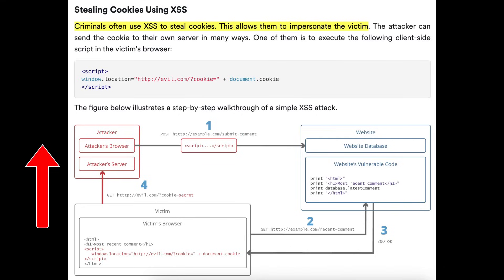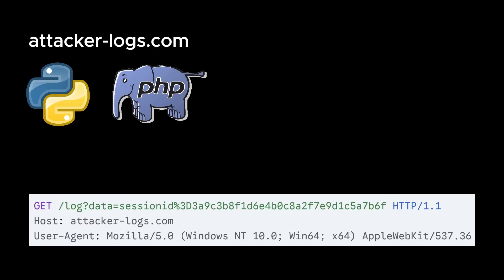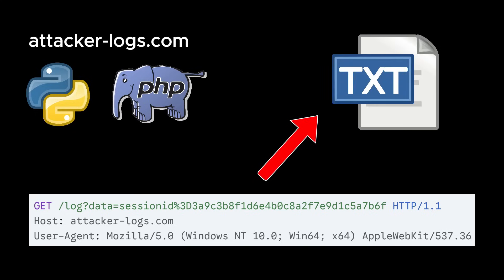The attacker sets up a simple log-parsing server, for example at attackerlogs.com. The endpoint is not a full website — it's just a listener, like a simple Python server or PHP script. It inspects all incoming GET requests, rips the query parameters such as anything after ?data=, and appends them to a text file.